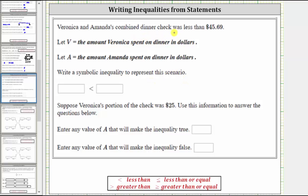Well, because their combined check was less than $45.69, we can say that V plus A is less than $45.69.